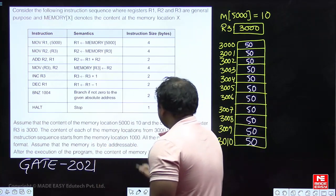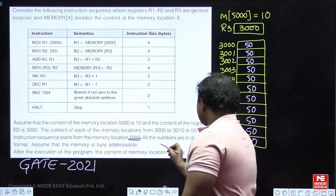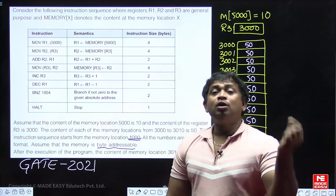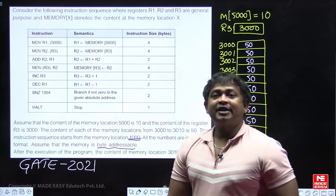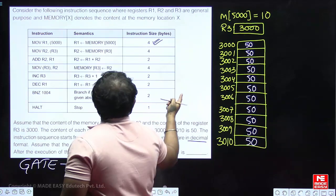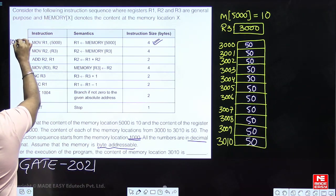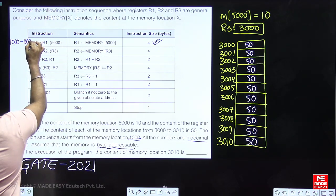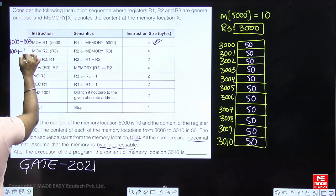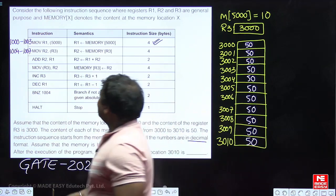The instruction sequence starts from memory location 1000, meaning these instructions are stored in memory from address 1000 onwards. All numbers are in decimal. Memory is byte-addressable, meaning each cell holds only one byte (8 bits). So a 4-byte instruction occupies 4 cells: addresses 1000, 1001, 1002, 1003.